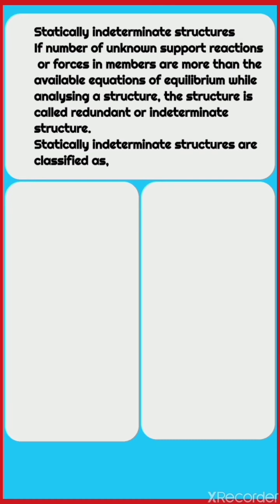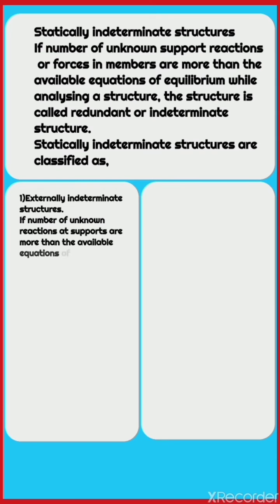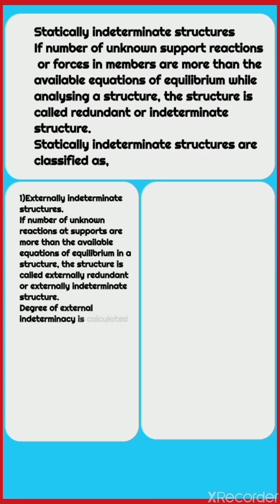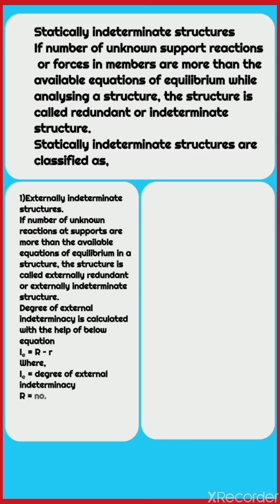Indeterminate structures are classified as: 1. Externally indeterminate structures. If the number of unknown reactions at supports are more than the available equations of equilibrium, the structure is called externally redundant or externally indeterminate. The degree of external indeterminacy is: iA = R − r, where iA is the degree of external indeterminacy, R is the number of unknown support reactions, and r is the available equations of equilibrium.